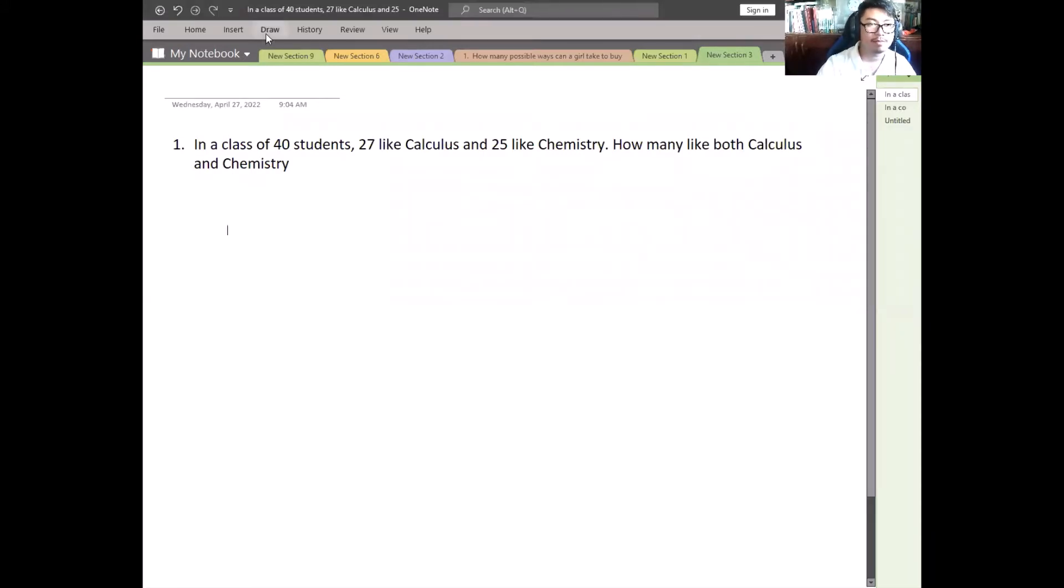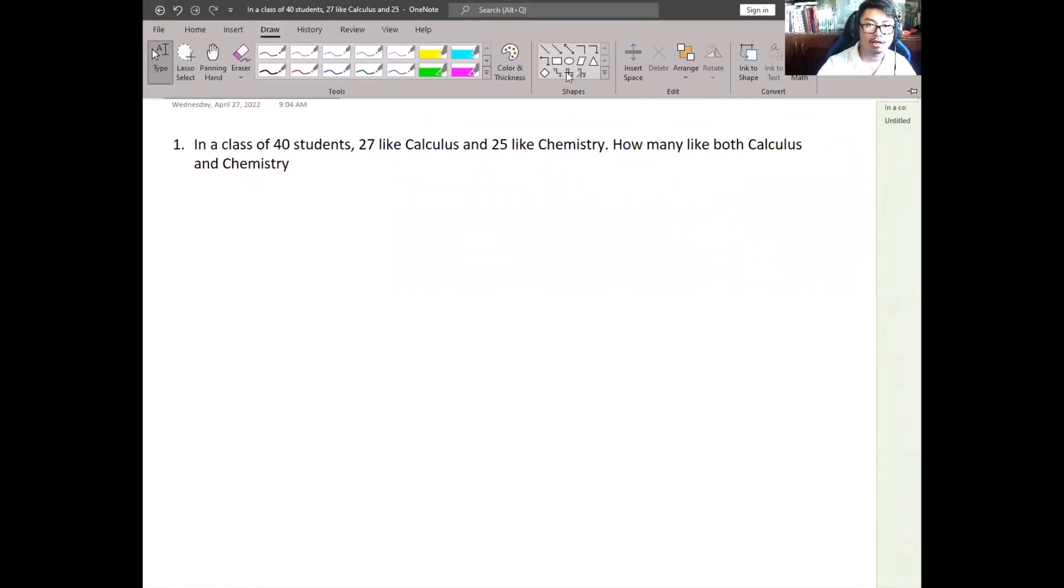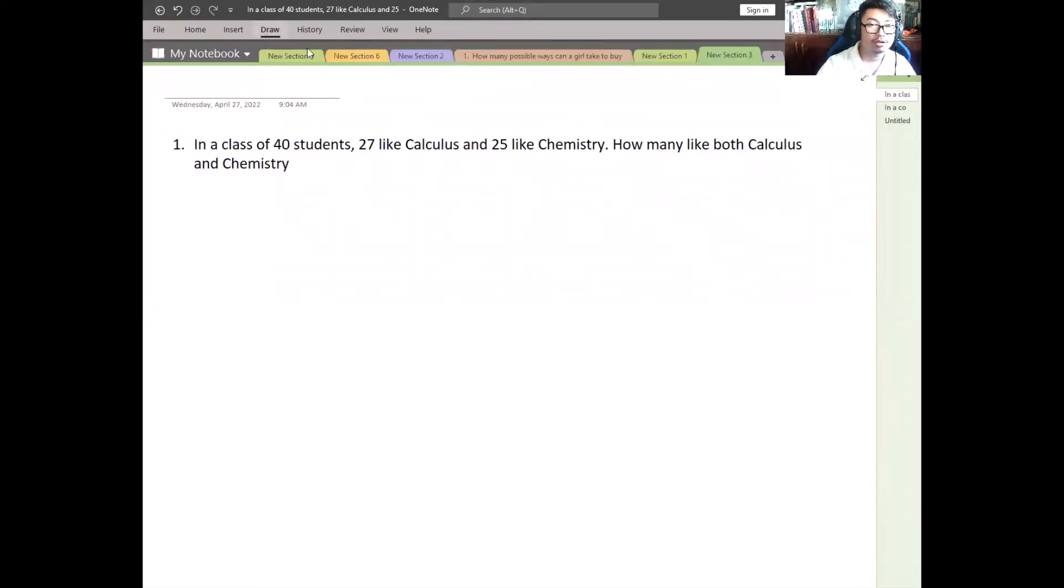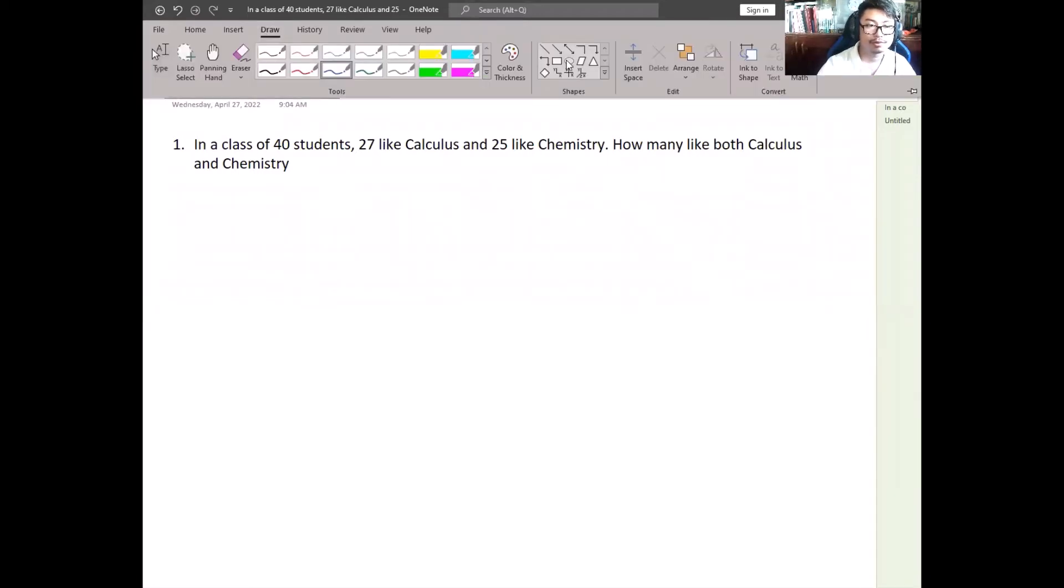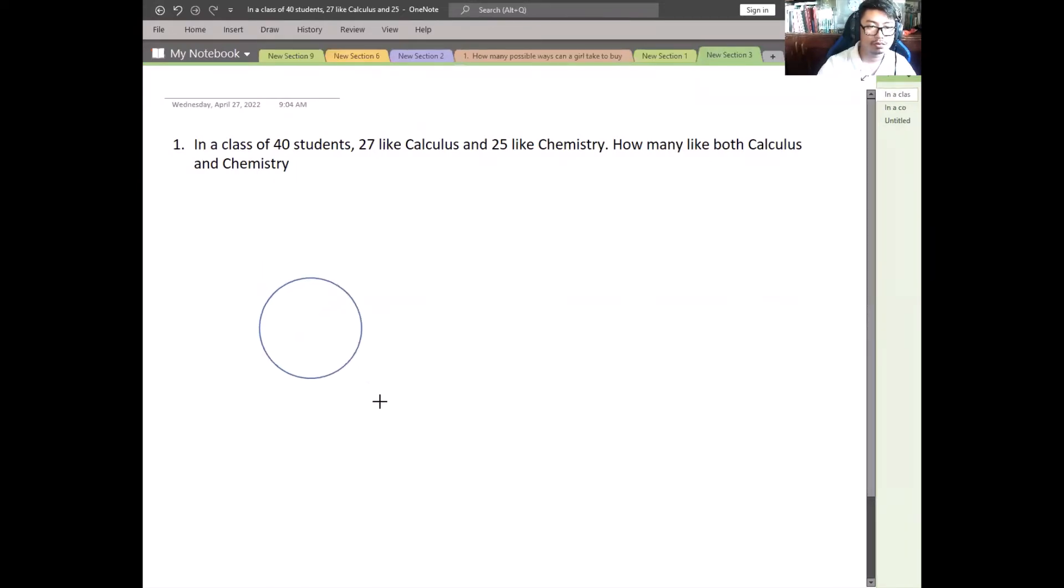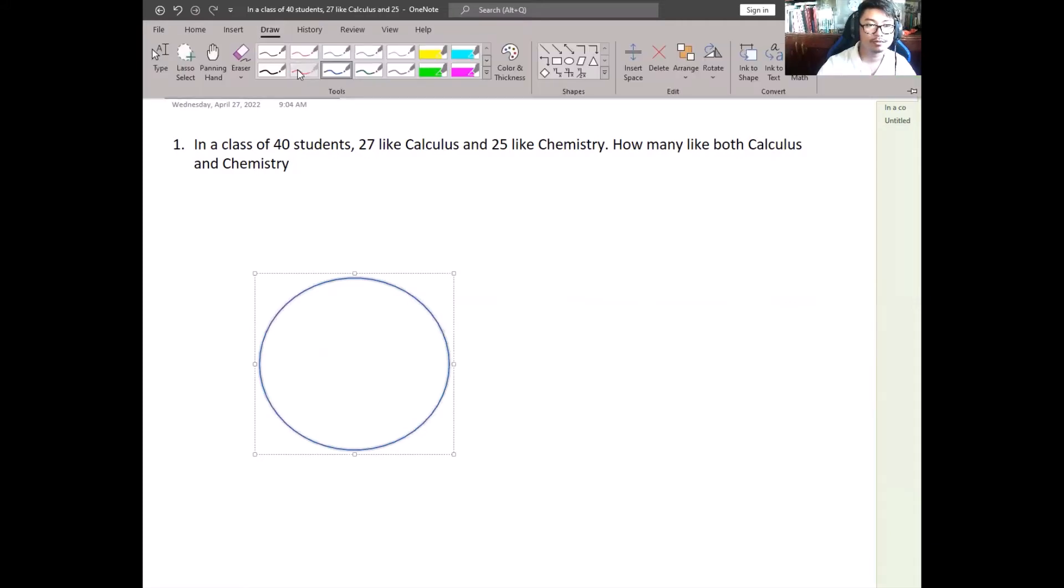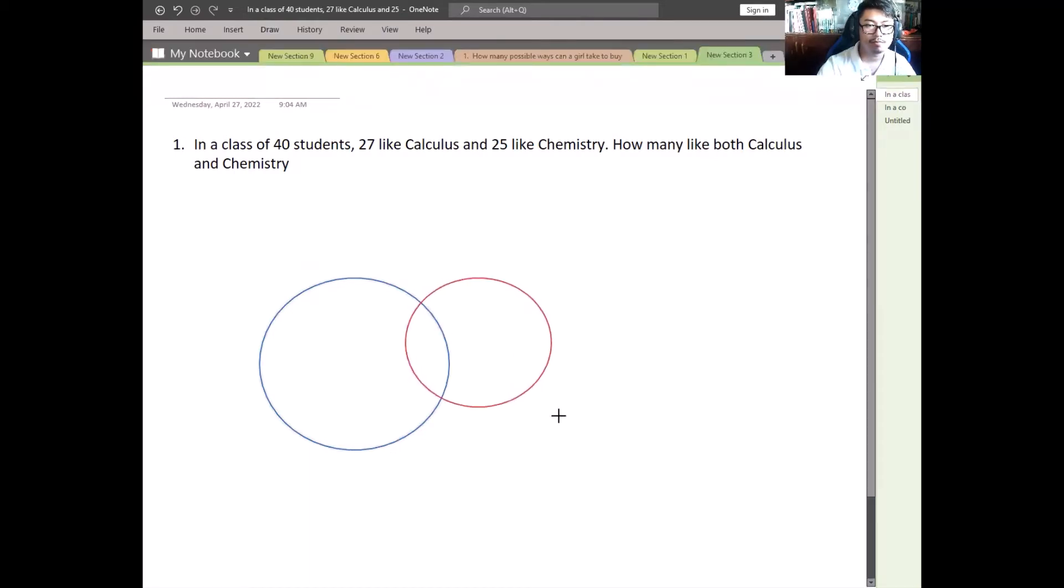This is the problem for the Venn diagram. First procedure is to construct a Venn diagram. We have two variables here, so we will draw two circles. Pardon for the delay, I'm just using my mouse.